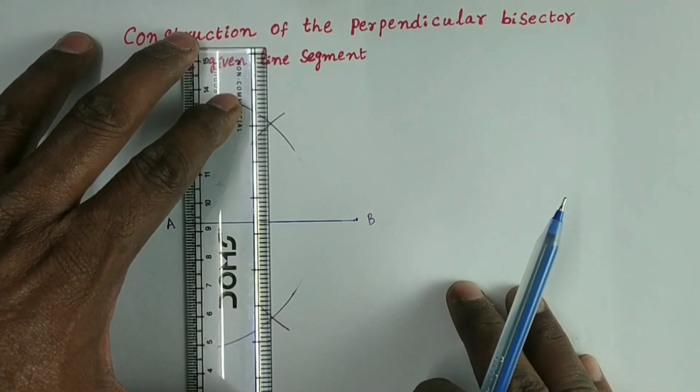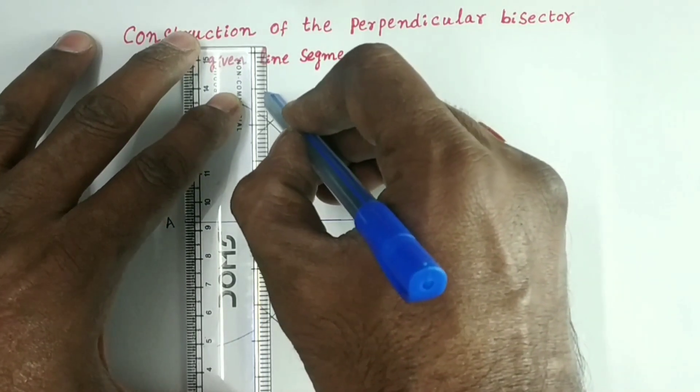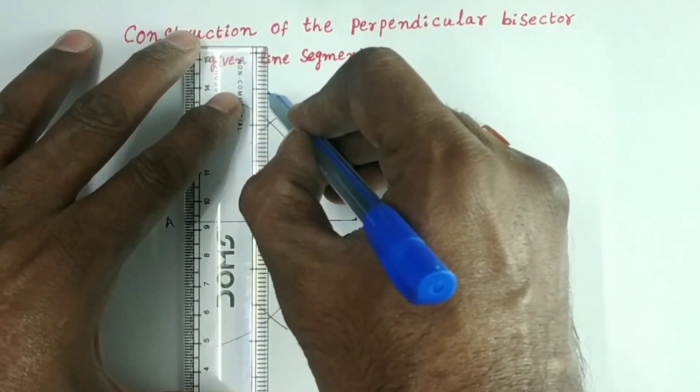And draw a line XY through the intersecting point of two arcs.